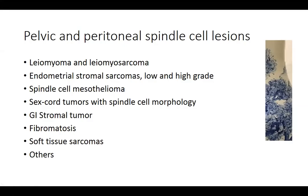So what should we be thinking about with this sort of morphology? We can think about pelvic and peritoneal spindle cell lesions. From a gynecologic pathology standpoint, we might consider conventional things like leiomyomas or leiomyosarcomas, but this lesion doesn't seem to have those features — it doesn't have the vascular type of growth we'd expect. We might think about endometrial stromal sarcomas, both low and high grade. It's fairly low grade in terms of pleomorphism, but it doesn't have quite the vascular pattern, and the inflammation would be unusual for a low-grade endometrial stromal sarcoma.